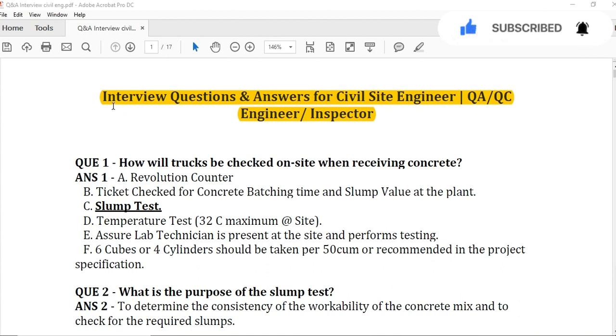The first question is: How will trucks be checked on site when receiving concrete, or what you have to check when concrete arrives at site? The first thing should be checked: a revolution counter of the truck should be checked. Second thing: ticket or delivery note should be checked for concrete batching time and slump value at the plant.